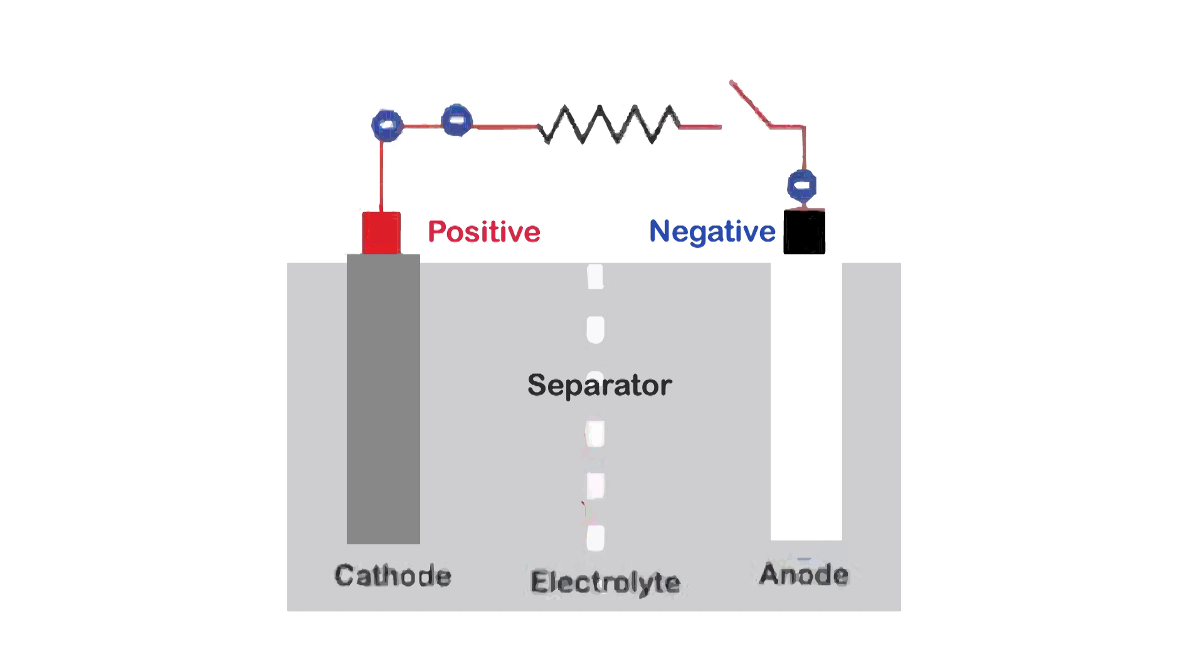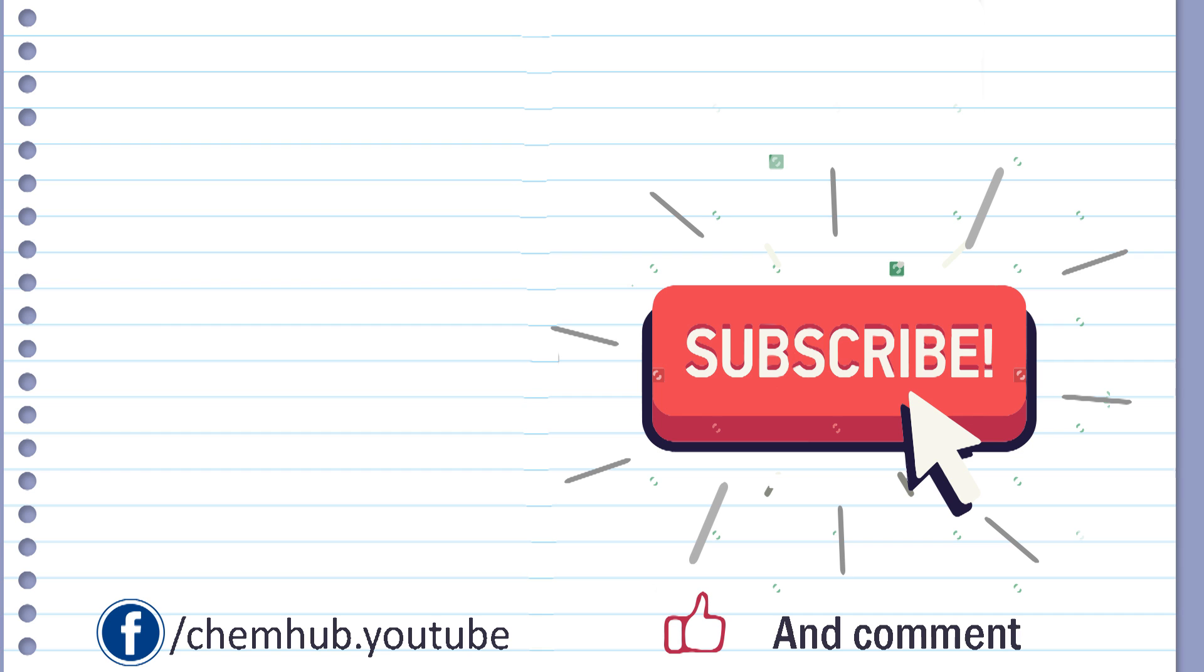In the end, don't get confused. The anode is the electrode at which oxidation reaction occurs, and the cathode is the electrode at which reduction reaction happens. That's a general rule. Please guys, leave a comment down below and subscribe for more tutorials.